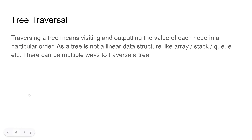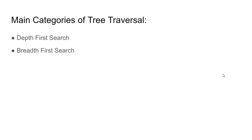Tree traversal: traversing the tree means visiting and outputting the value of each node in a particular order. As the tree is not a linear data structure like an array, stack, or queue, there are multiple ways to traverse the tree. Main categories of tree traversal: depth first search, breadth first search.